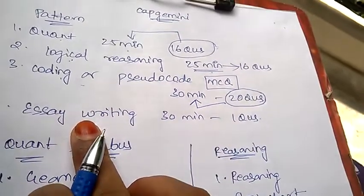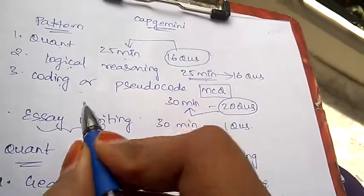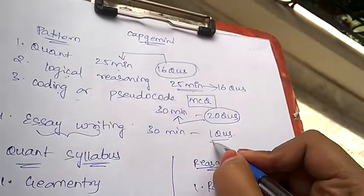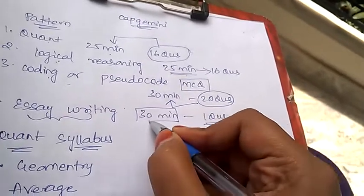In the fourth section, you need to write email writing or essay writing. Mostly nowadays they are asking to write essay writing. There will be one question on essay writing and the time given to you is 30 minutes.